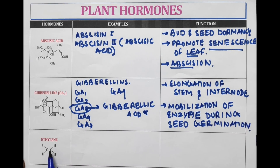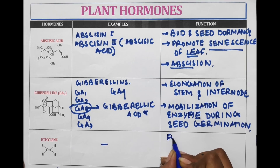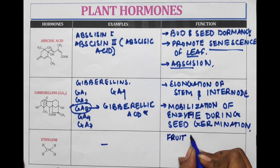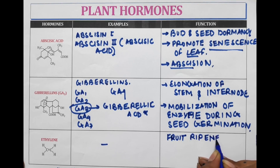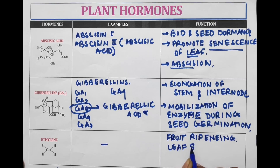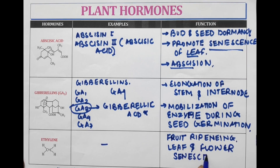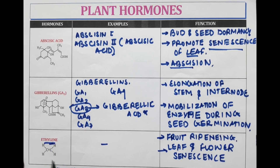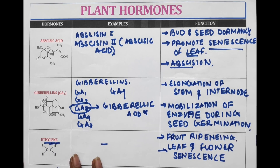The last plant hormone, the 5th type, is ethylene. There are no sub-types of ethylene. The functions of ethylene include promoting fruit ripening and causing leaf and flower abscission. Ethylene is used as an artificial ripener, injected into fruits to ripen them early. Thank you for watching this video.